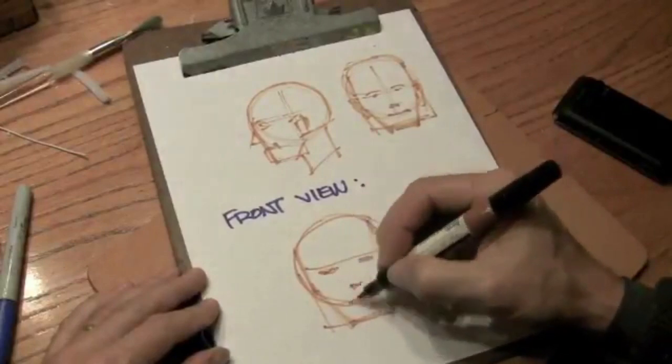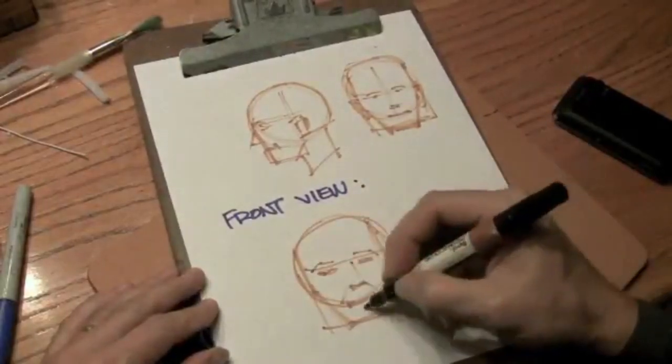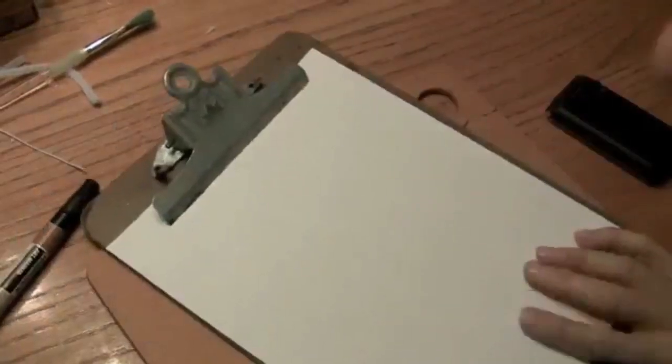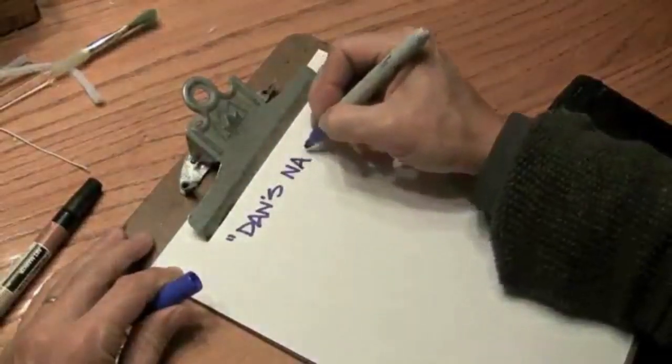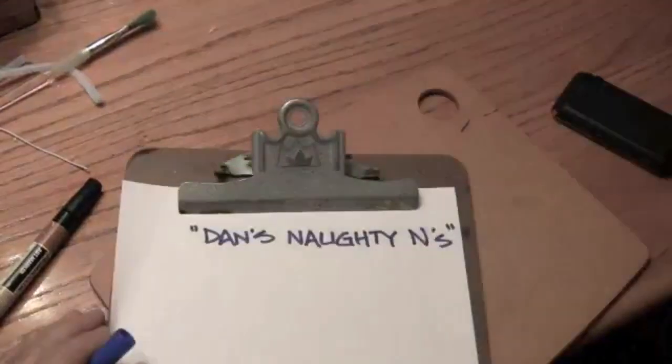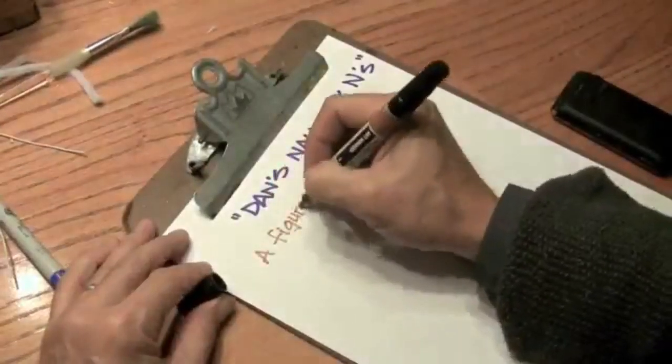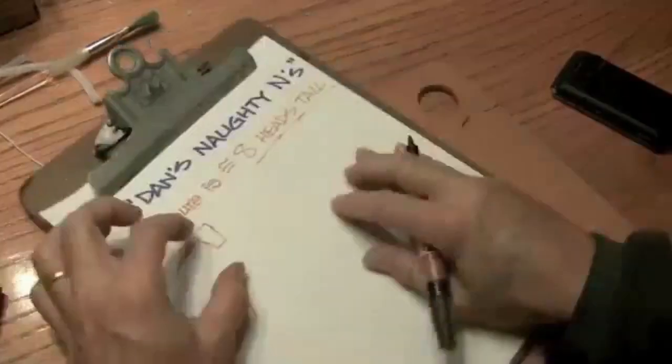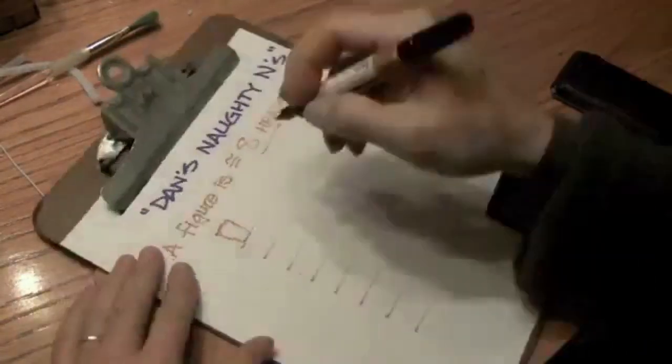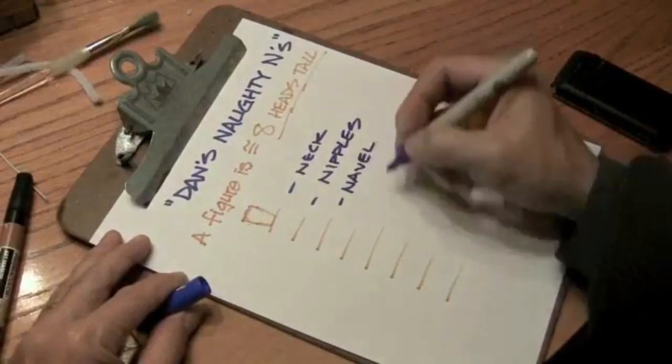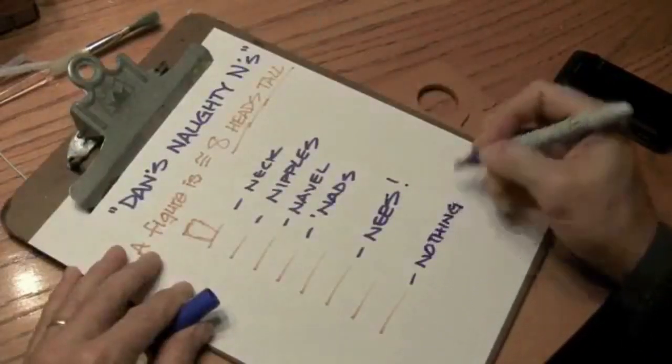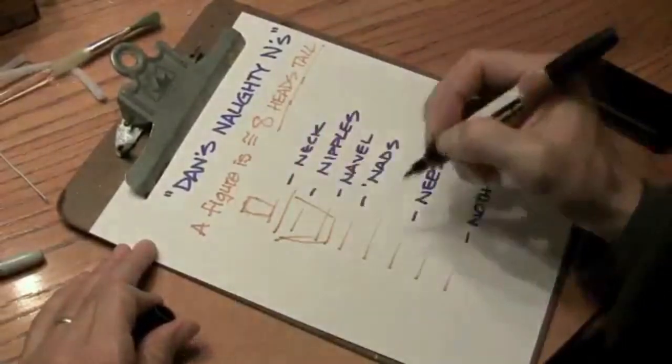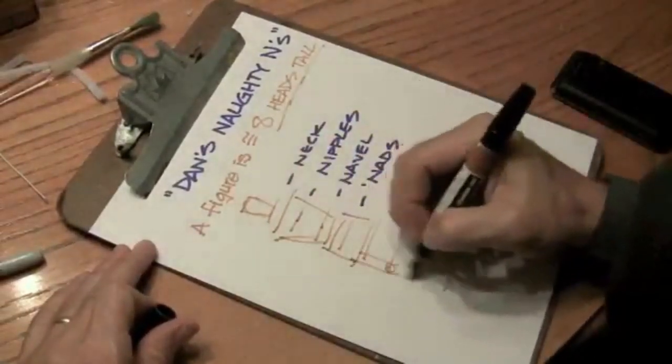Let's start putting this all together. How tall is a human being? I was walking through an art store a couple years ago with this list of things under my arm, and the manager pointed and laughed and said, "Look, Dan's naughty ends." If you divide the human figure into eight heads, those heads fall at neck, nipples, navel, nads, knees, and nothing.